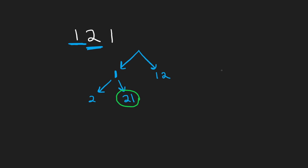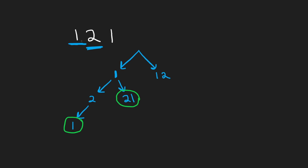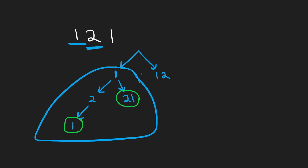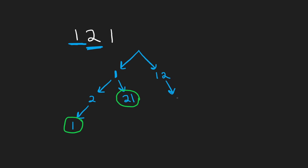Continuing from the '1' path: after '2' we get to '1', which can be taken by itself, reaching the end — another valid base case. So starting with '1' alone gives us two different ways to decode. If we start with '12' instead, we have just one character left ('1'), which decodes one way. So overall we have three different ways to decode the string '121'.